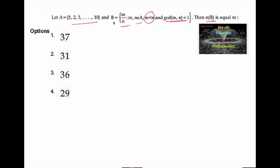Let us find the elements in set B with the conditions: M upon N where M and N belong to set A, and GCD of M and N is 1, meaning there is no common factor other than 1.